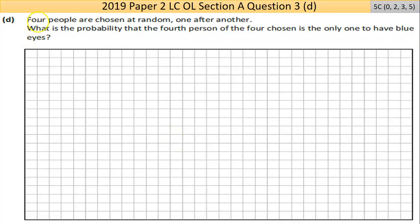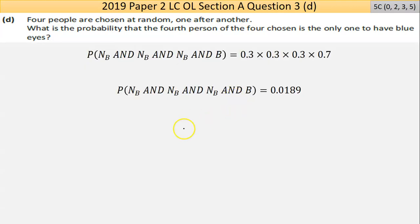The last part here, part D, says four people, just for the fun of it, are chosen at random, one after another. So that's important for a reason we'll see hopefully in a second. What's the probability that the fourth person of the four chosen is the only one to have blue eyes? So basically, the first person will be not blue, and not blue, and not blue, and blue. So that's your basic scenario. So it's P(NB) times, because it's 'and', times P(NB) times P(NB) times P(B). So it's 0.3 times 0.3 times 0.3 times 0.7. Multiply those numbers together, you get 0.0189.